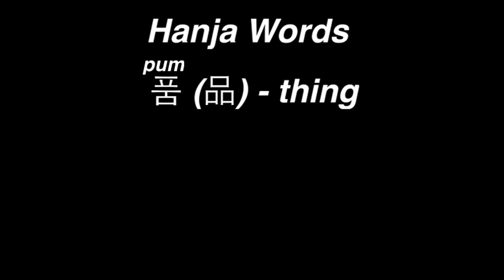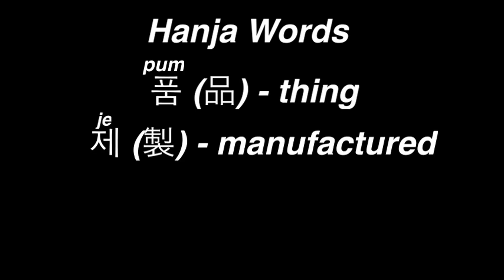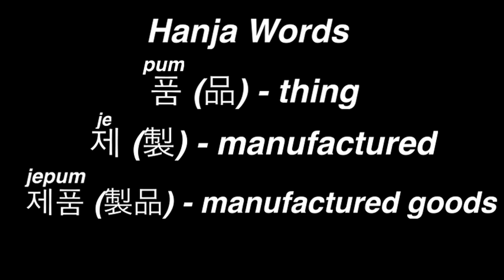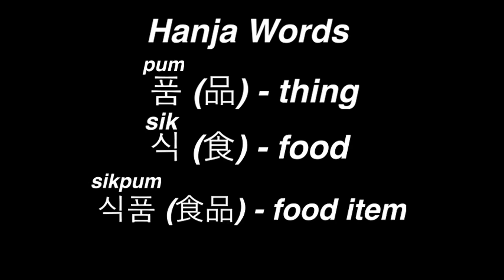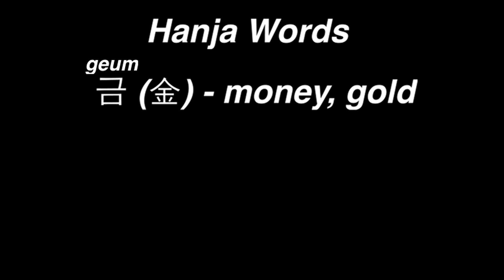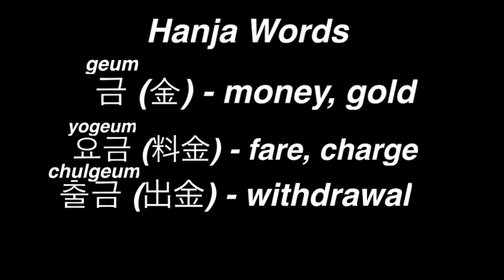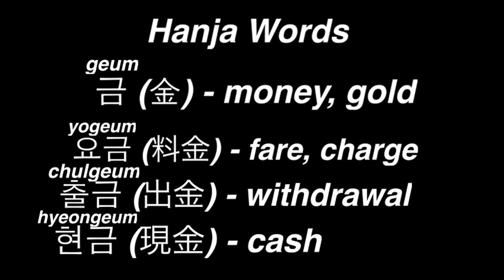Hanja make up a lot of Korean words. For example, 품 means 'thing.' If we add on 제, meaning 'manufactured,' we get 제품, a product. 작품 is an art piece, 식품 is a food item, and so forth. Or if we take the hanja 금, meaning 'money,' we can have 요금, 출금, and 현금.